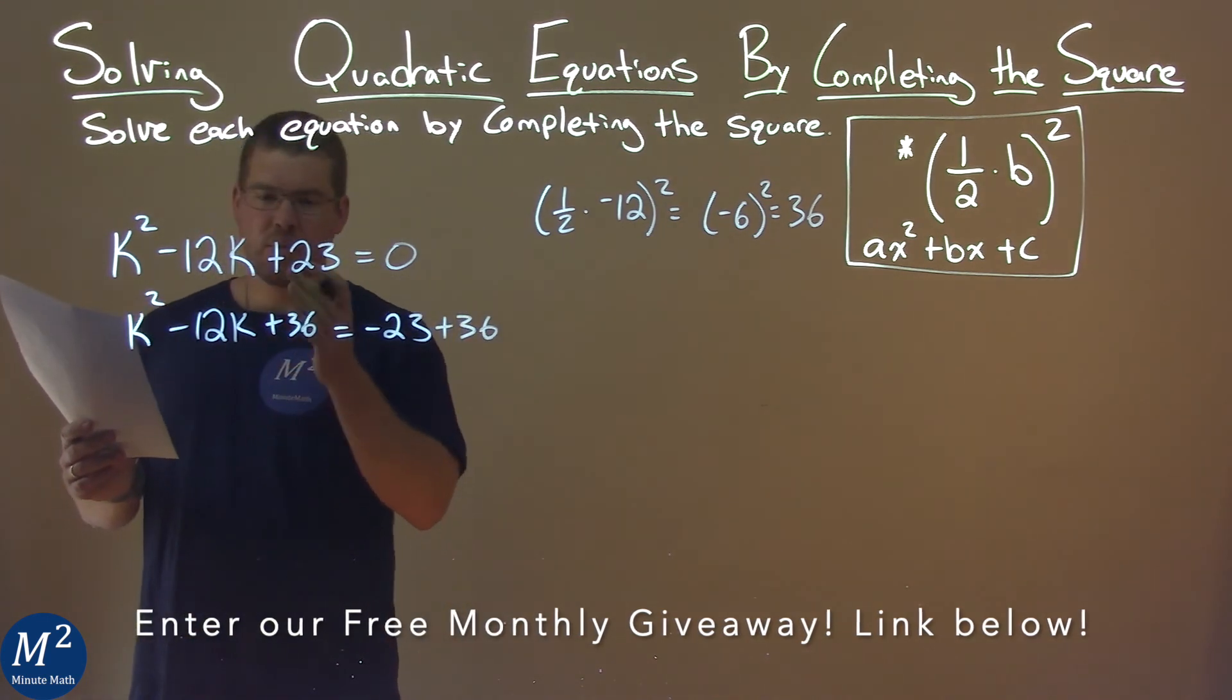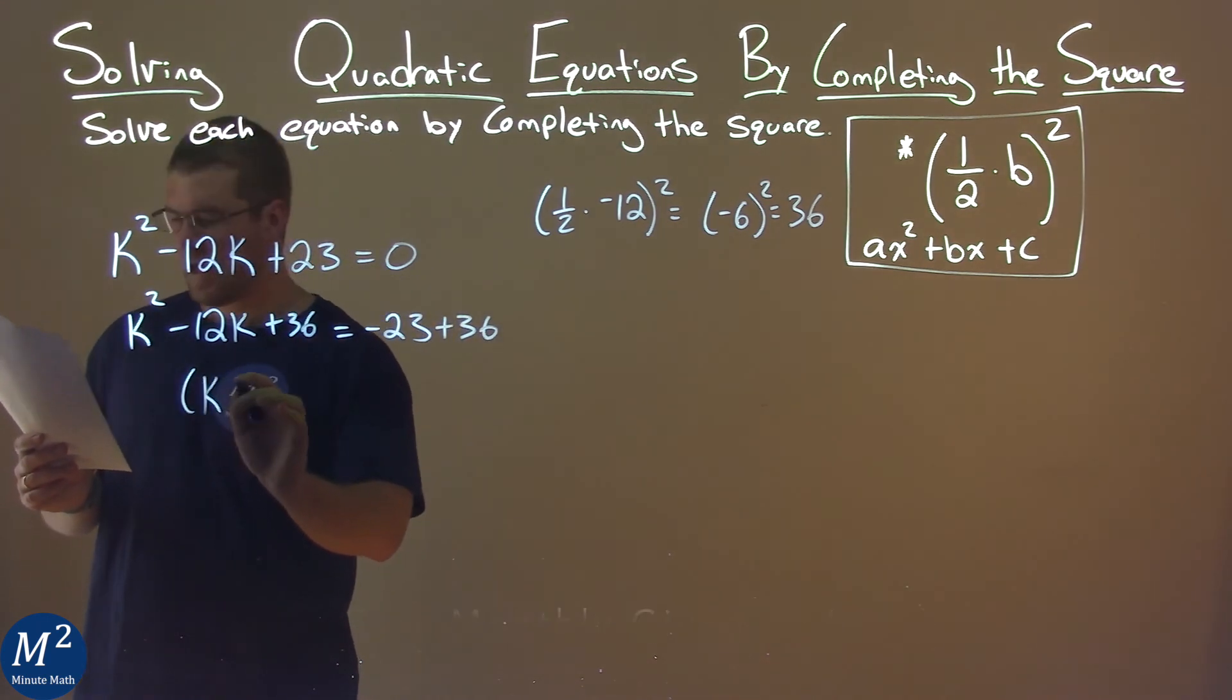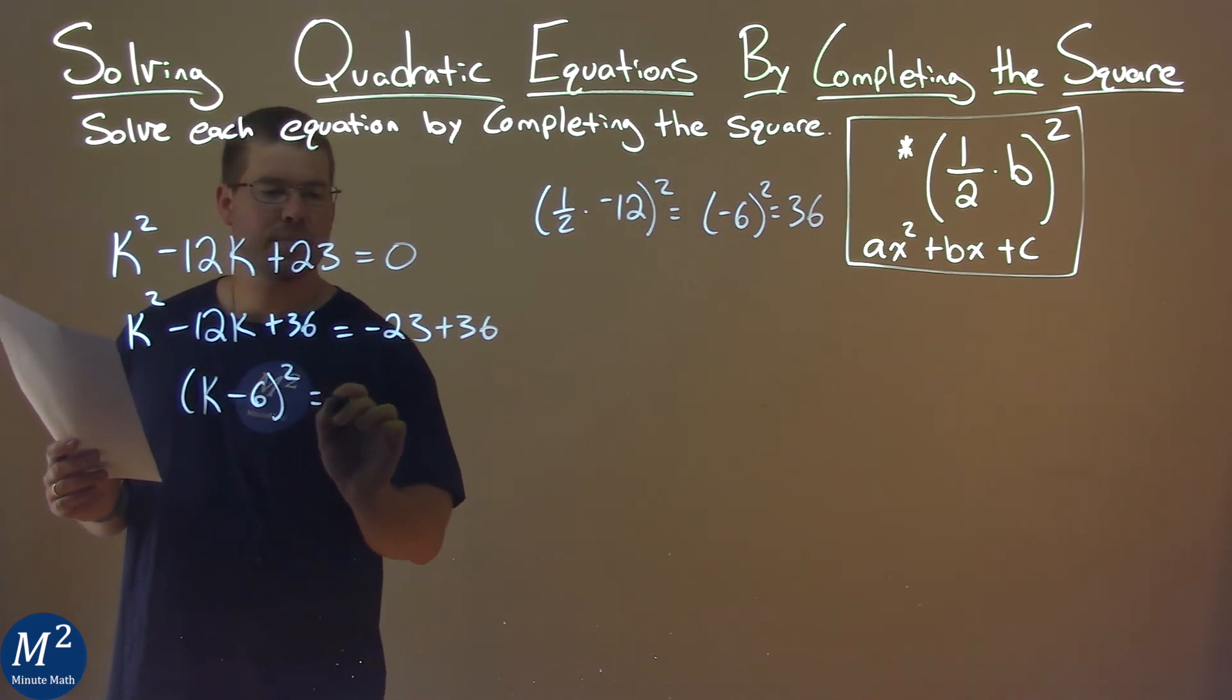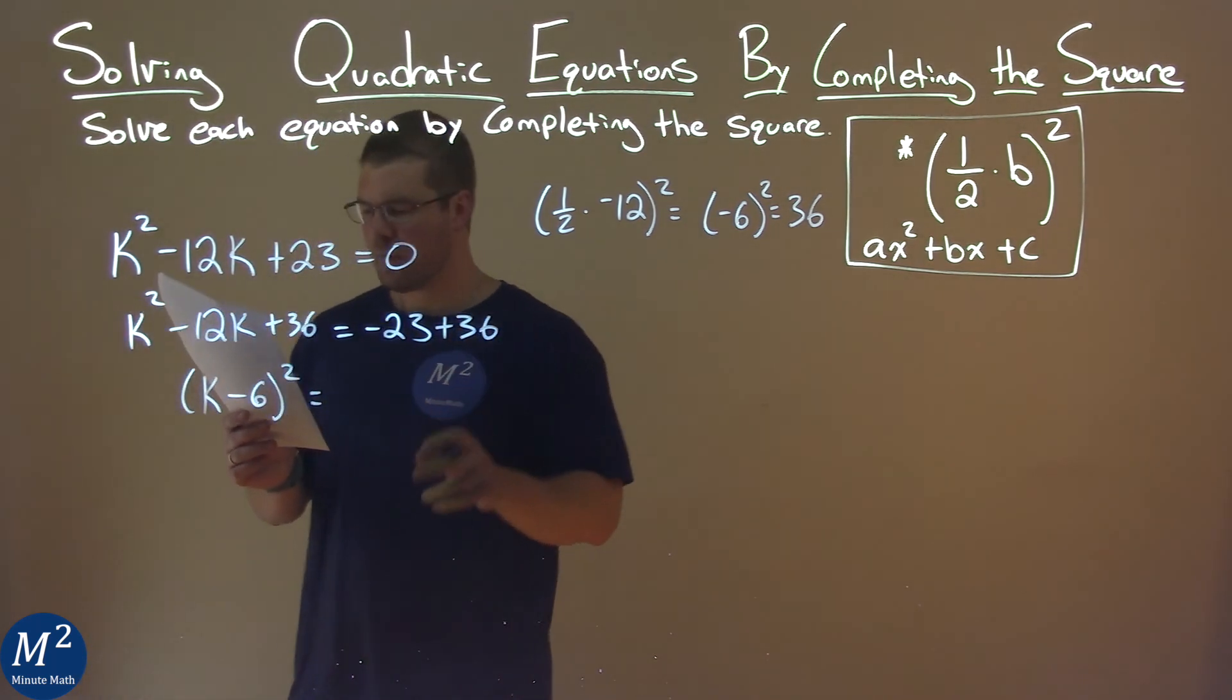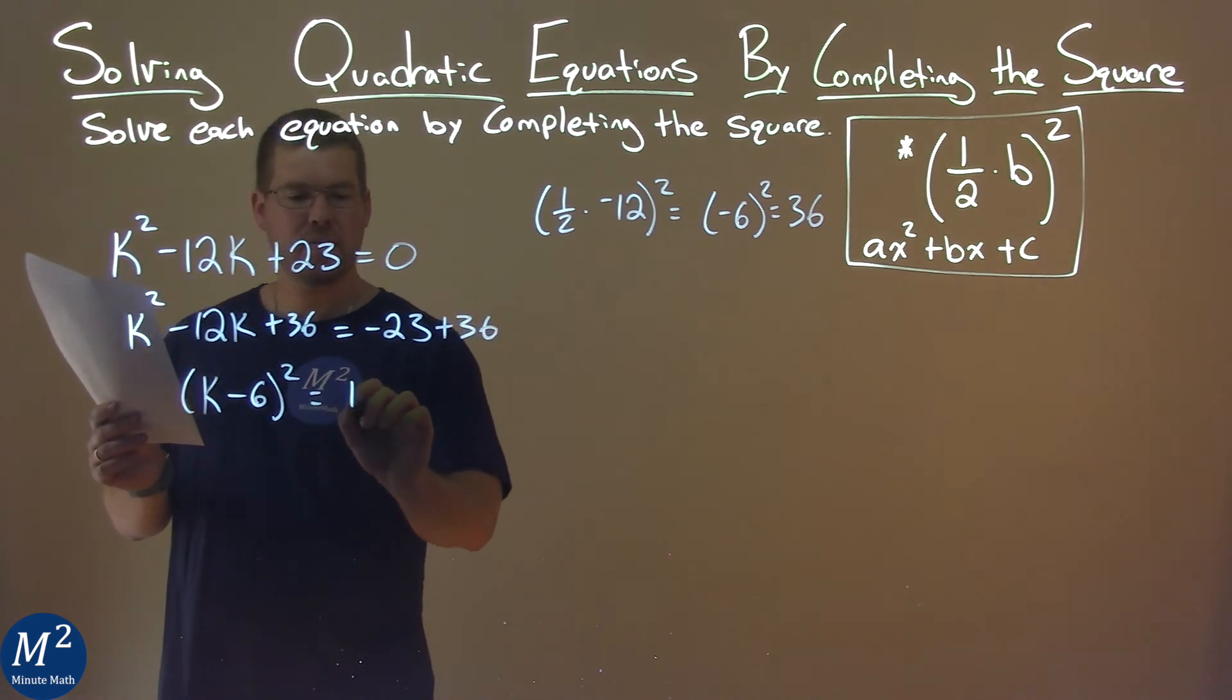So the left hand side now is a perfect square, k minus 6, all squared. The right hand side, negative 23 plus 36 is a positive 13.